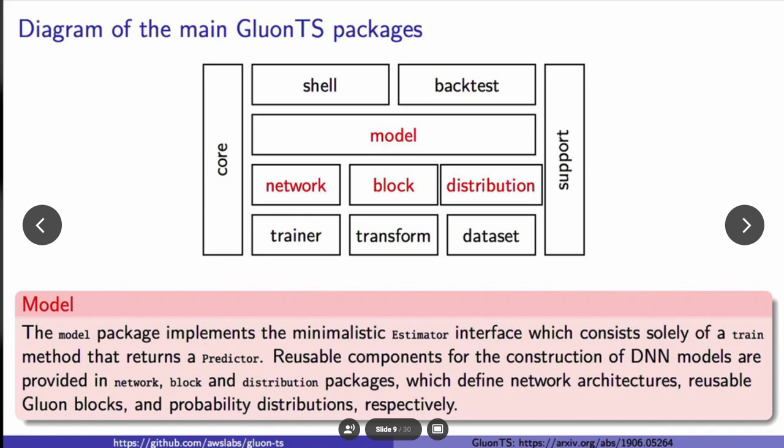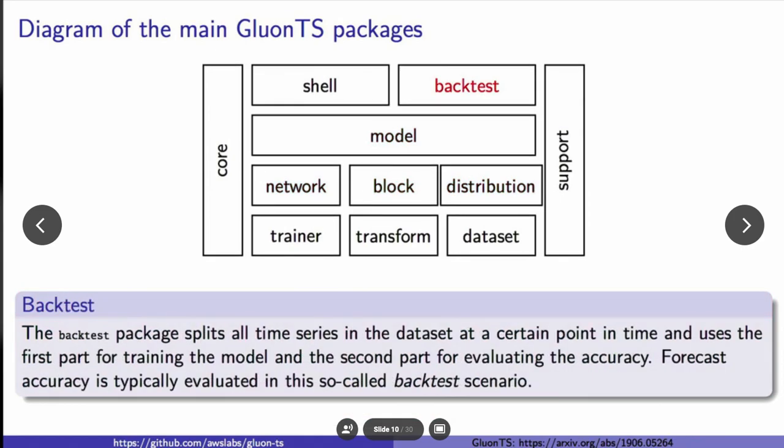The network package defines network architectures. In block, we have reusable gluon blocks. GluonTS is written in symbolic hybrid forward gluon form. We also provide a probability distributions package. This is almost a standalone package that you can use for different probability distributions.